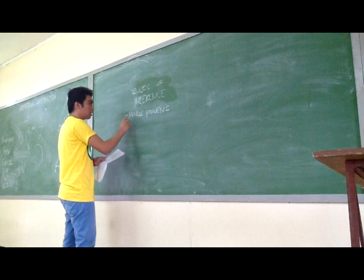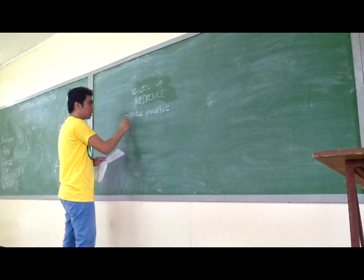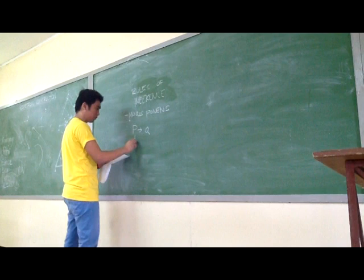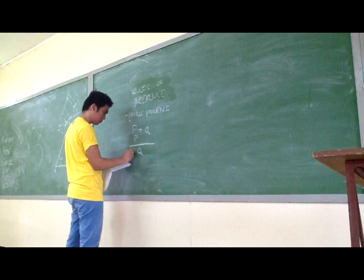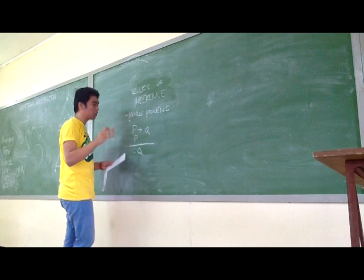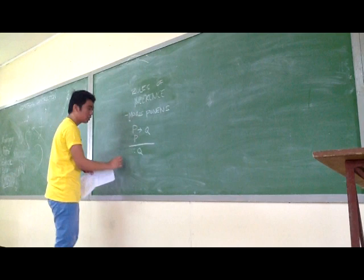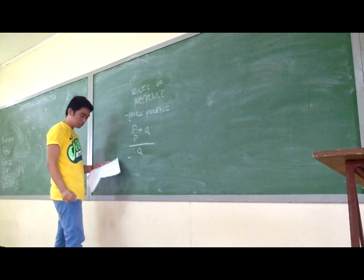So, an example of Modus Ponens is this: P implies Q. Therefore, it is Q. As stated here, if P then Q, if P then Q, therefore it is Q. That is Modus Ponens. The second rule is the opposite of Modus Ponens — that is Modus Tollens.